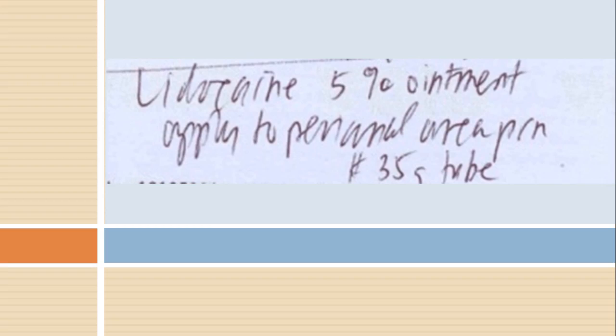Here's a real fun one — not exactly the greatest handwriting — but it's lidocaine 5% ointment. All it says is apply to the perianal area as needed. Lidocaine is a topical analgesic to help you not feel things, and this will help someone who basically has a sore rectum — maybe they have hemorrhoids — in a 35 gram tube. So we're going to write: apply to the perianal area PRN, as needed.